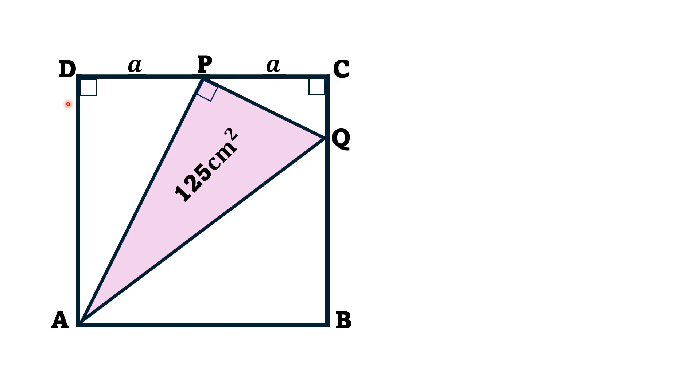Since CD is the side of the square, that length is 2a, thus the length AD is also 2a, because it's the other side of the square.